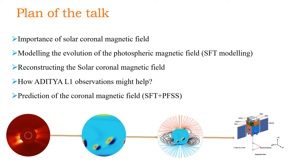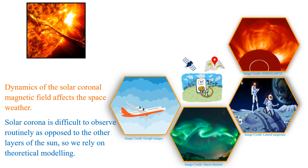Solar corona is a dynamic, million-degree plasma environment which is extremely difficult to observe from Earth except during total solar eclipses. Solar wind, high energy radiation, and solar storms originate from the solar corona and create adverse space weather conditions, posing threats to space assets, telecommunication systems, navigation, and sometimes power grids. Observation of the solar corona is very challenging because of its low density and low photon flux, so scientists rely upon theoretical models.